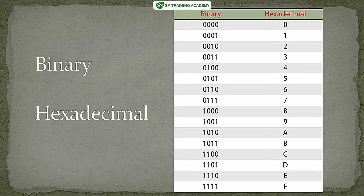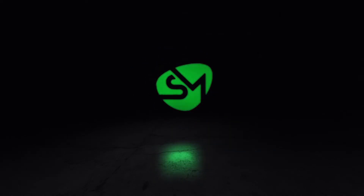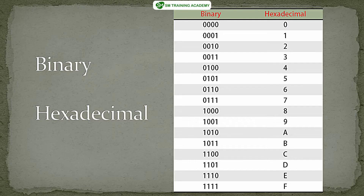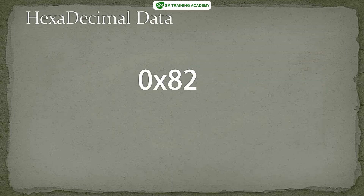Hello everyone. In this video we are going to learn the type conversion between binary numbers to hexadecimal numbers and hexadecimal numbers to binary format numbers. A number can be represented both in binary format as well as in hexadecimal format. We'll learn how to convert a binary format number into equivalent hexadecimal format and then vice versa. First we will convert a hexadecimal format number into equivalent binary bits.